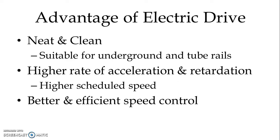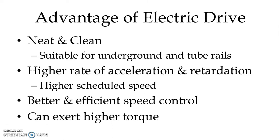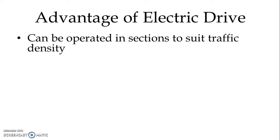In case of steep gradient with slow speed, locomotion is possible. It can exert very higher torque compared to steam traction and it can handle higher traffic density for more number of passengers. It can also be operated in sections to suit traffic density.